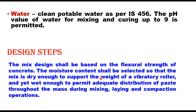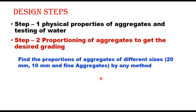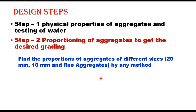The first step in design is testing the aggregate and water. Physical properties of cement, aggregate, and water are checked, and if found suitable, we proceed to step two: proportioning of aggregates to get the desired grading. Generally at site, three sizes are available — 20 mm, 10 mm, and fine aggregate — and these can be proportioned by any method to achieve the grading given in the IRC code.